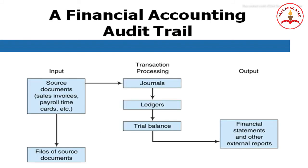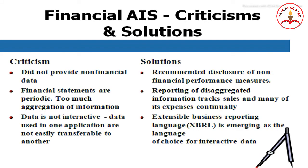In the financial accounting audit trail, inputs include source documents such as sales invoices, payroll records, timecards, and files of source documents. Transaction processing involves journal entries, ledgers, and trial balances. Outputs take the form of financial statements and other external reports — including income statements, statements of retained earnings, and other statements — which are useful to any institution.